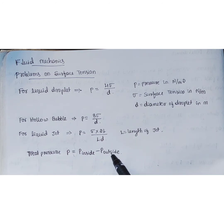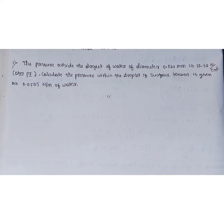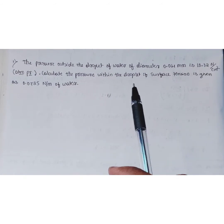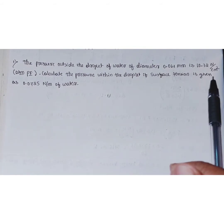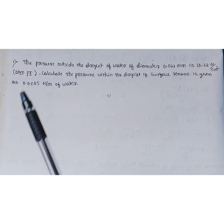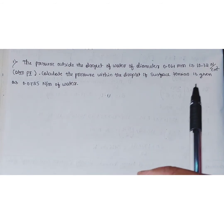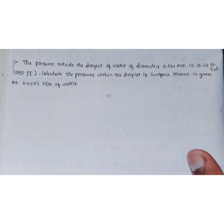Using these three formulas and based on the conditions given in a problem, we can proceed to solve. Here is our first problem: the pressure outside a droplet of water of diameter 0.04 mm is 10.32 Newton per centimeter square — that is the atmospheric pressure. We need to calculate the pressure within the droplet if the surface tension of water is given as 0.0725 Newton per meter.